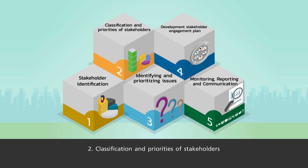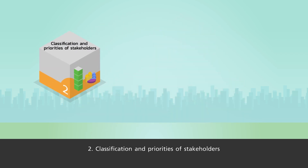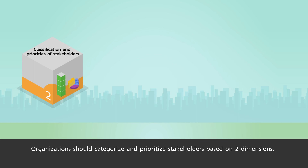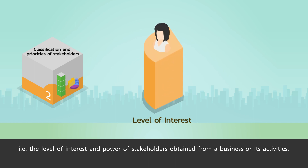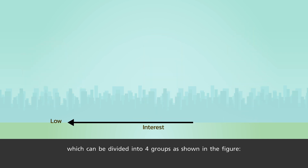Step 2: Classification and Priorities of Stakeholders. Organizations should categorize and prioritize stakeholders based on two dimensions — the level of interest and power of stakeholders obtained from a business or its activities — which can be divided into four groups as shown in the figure.